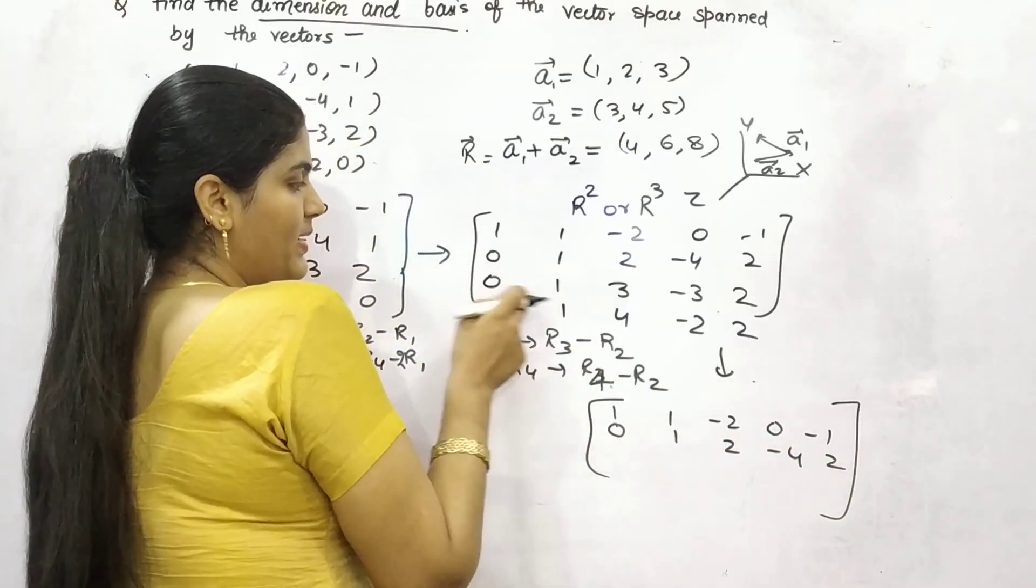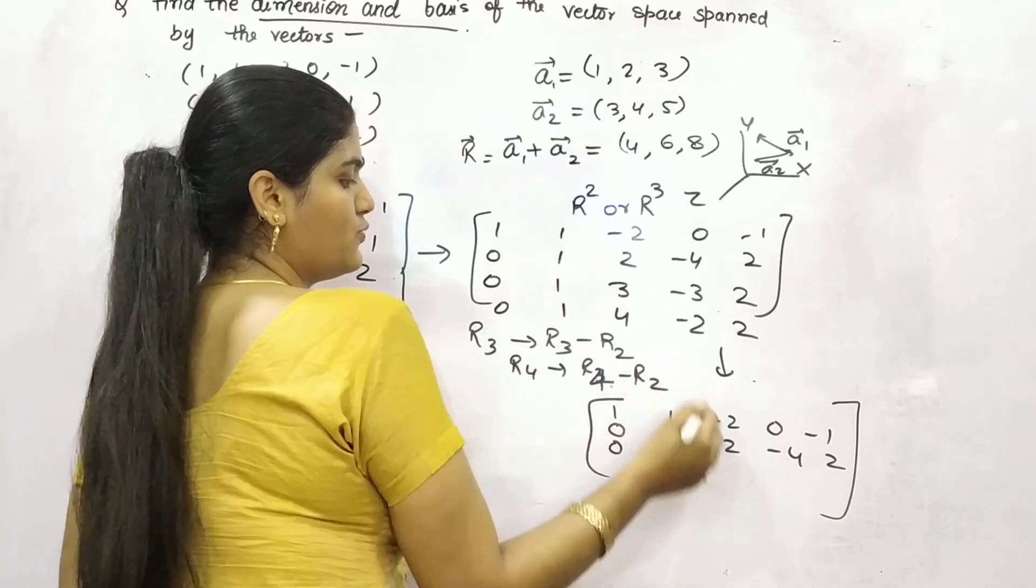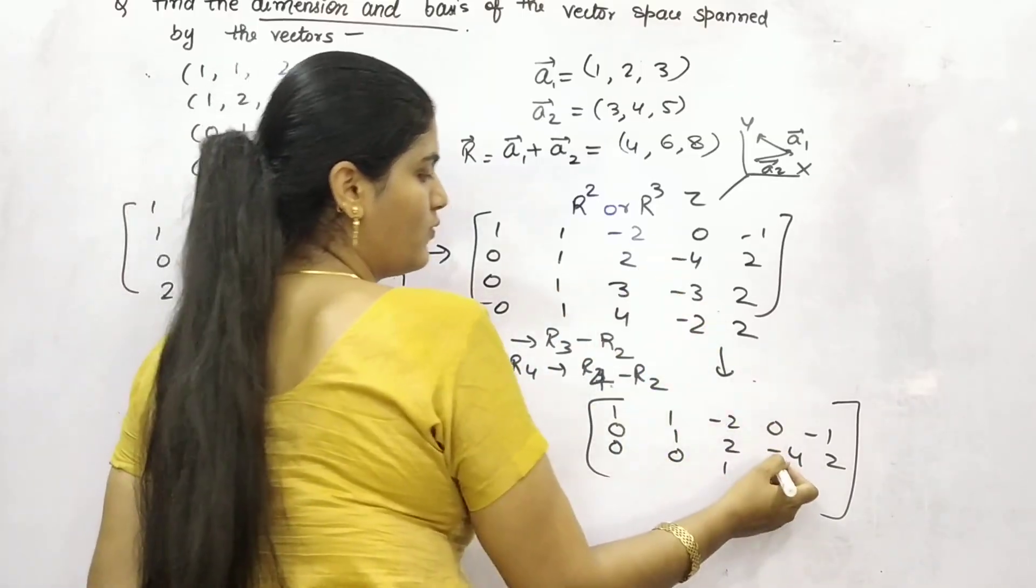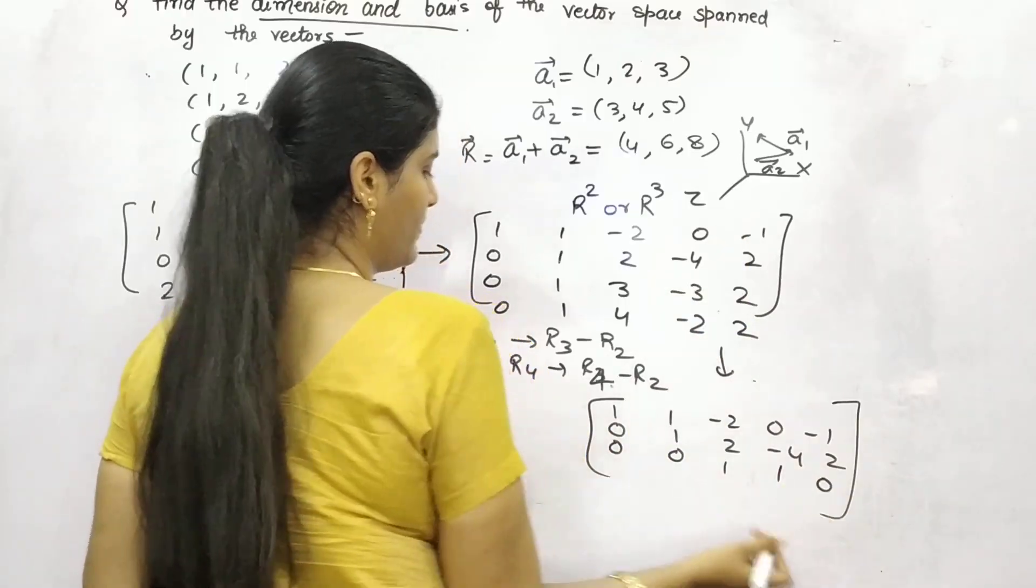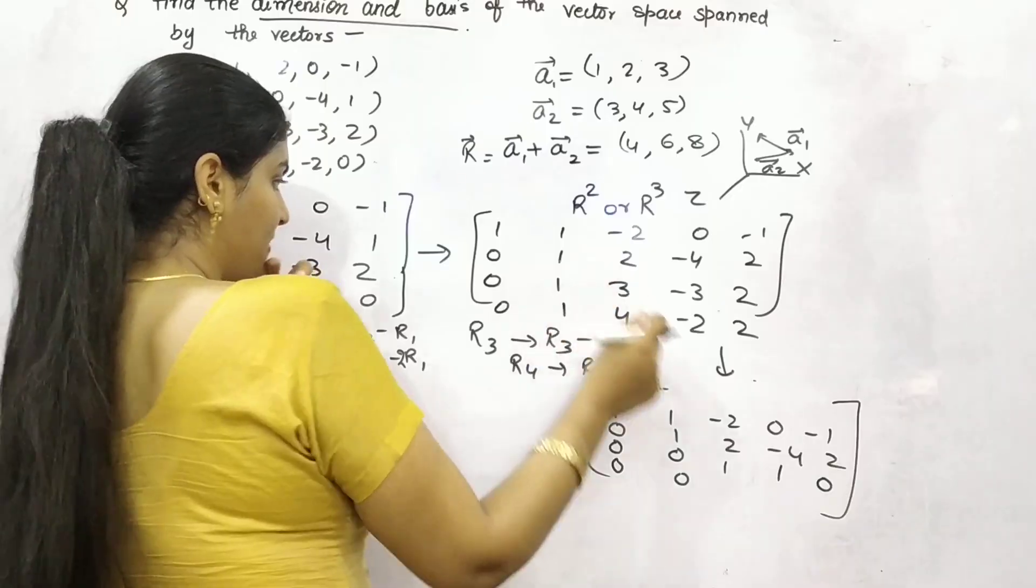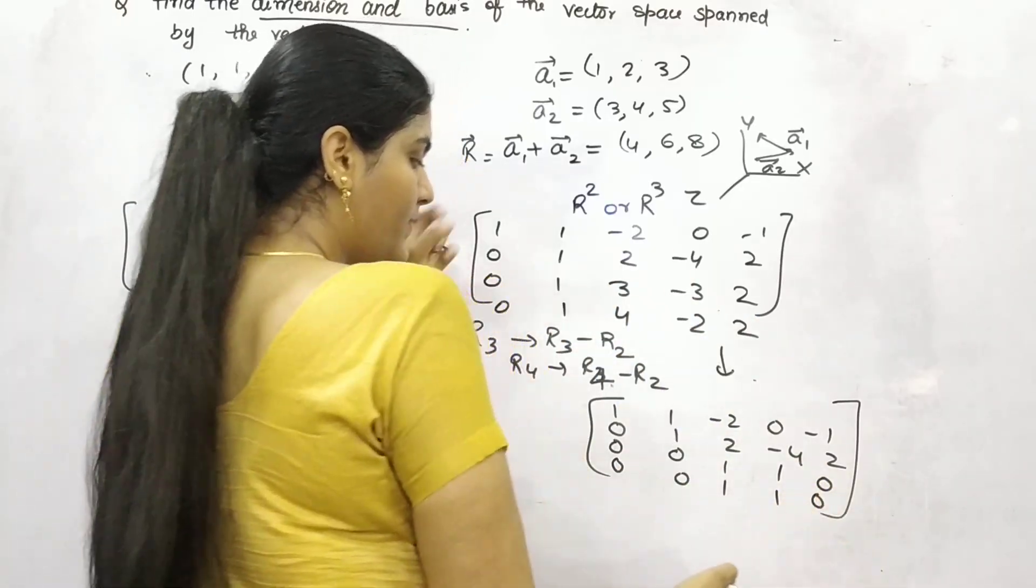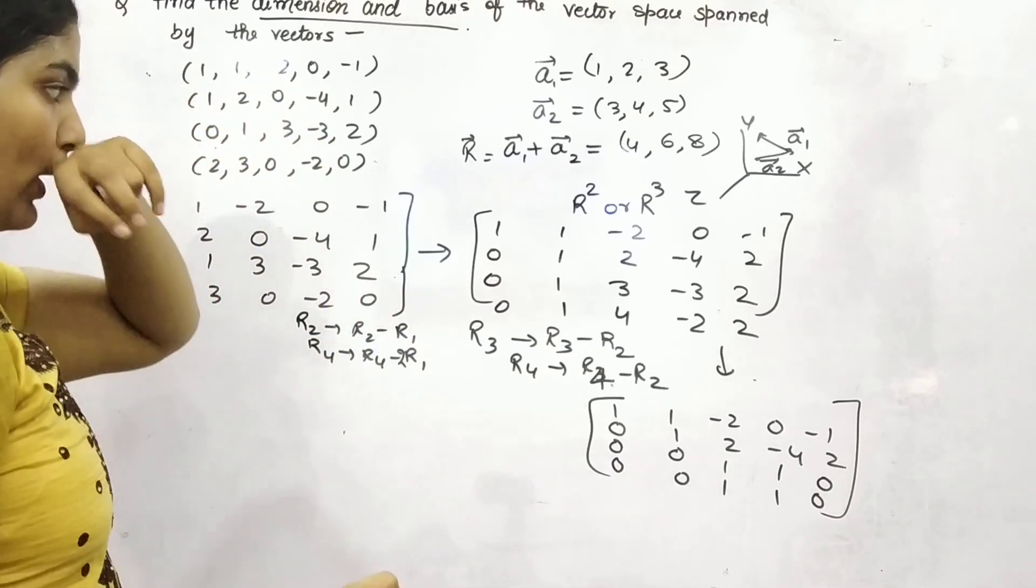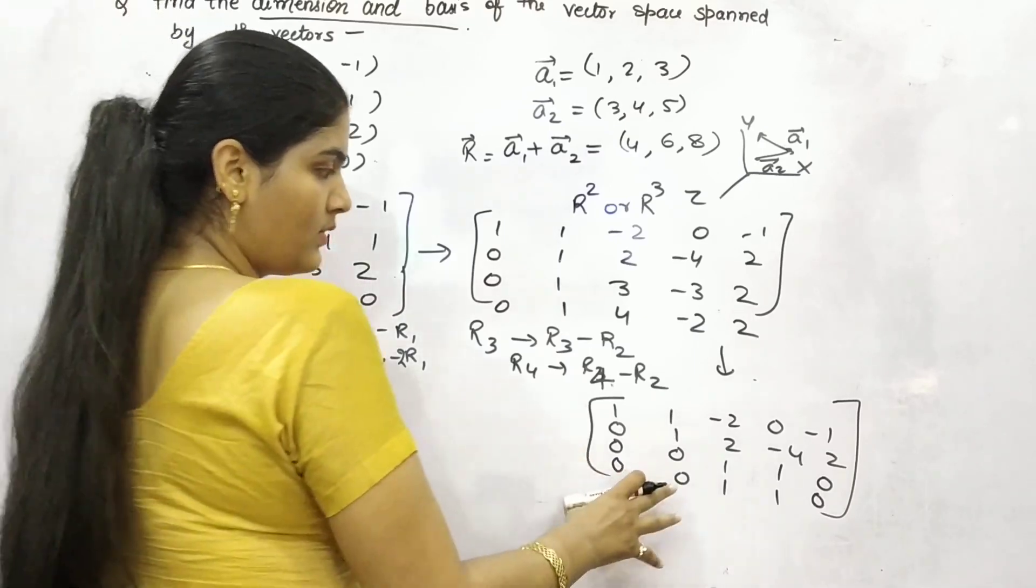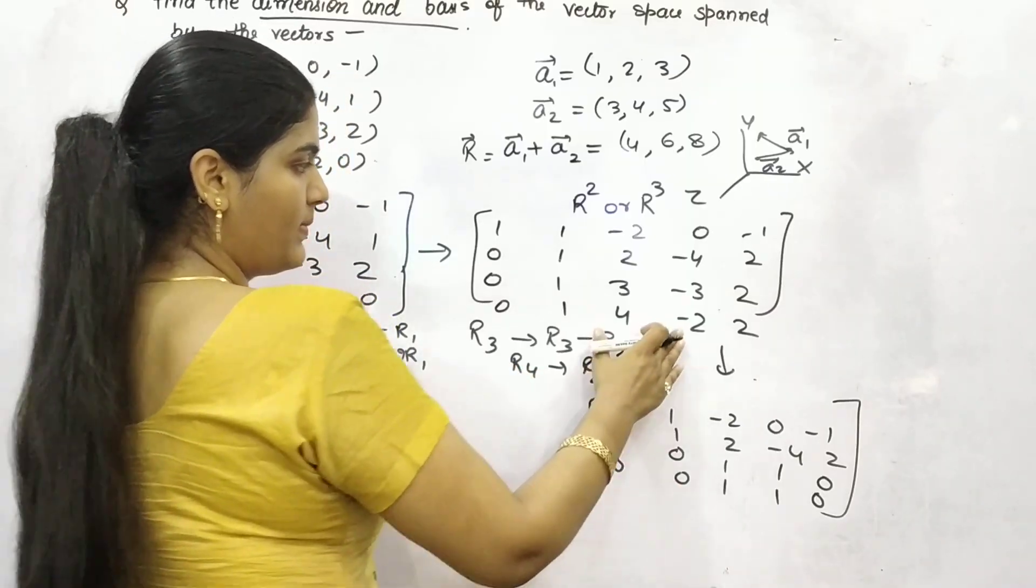Then after, R3 minus R2, 0 minus 0 is 0, 1 minus 1, 0, 1 minus 1, 0, 4 minus 3 is 1, minus 2 plus 3 is 1, 2 minus 2 is 0. Now, this is what you have got so far. 4 matrices and this is what we have got, minus 2.